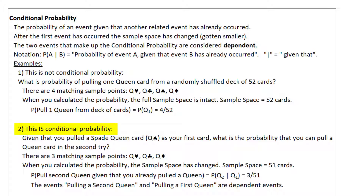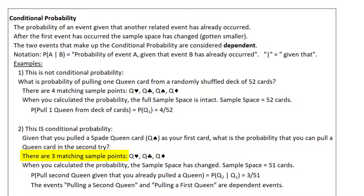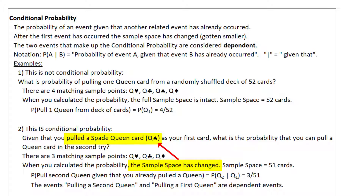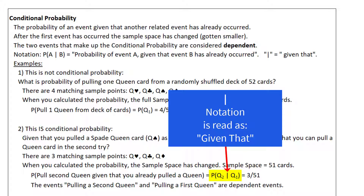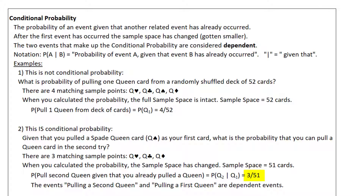This is conditional probability. Given that you pulled a spade queen card as your first card, what is the probability you can pull a queen card on the second try? Now there are only three matching sample points — 1, 2, 3. When you calculate the probability, the sample space has changed to 51 cards. That's the key to conditional probability: it's conditioned on the fact that something already happened. We already pulled one card. The probability of a second queen, given that queen 1 has already been selected, equals 3 divided by 51. These events — pulling a second queen and pulling a first queen — are called dependent events.